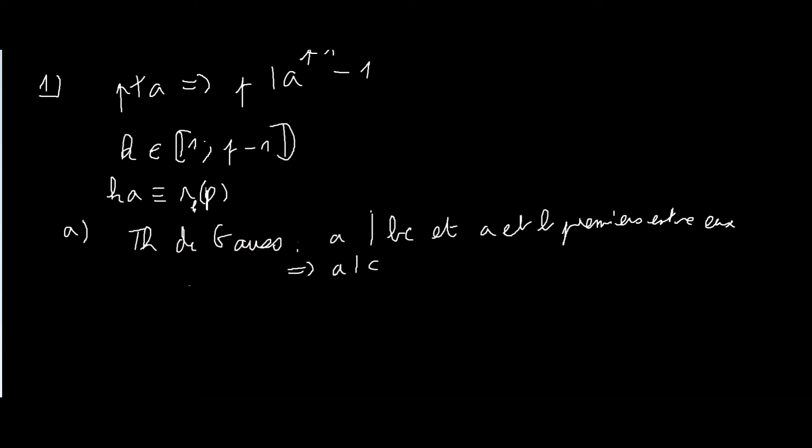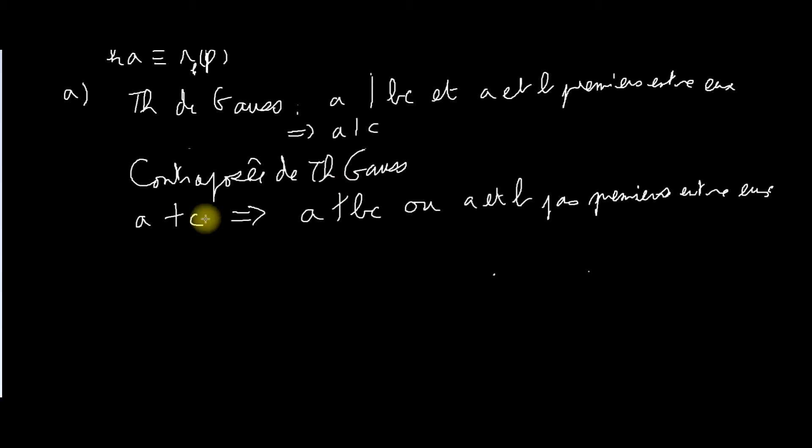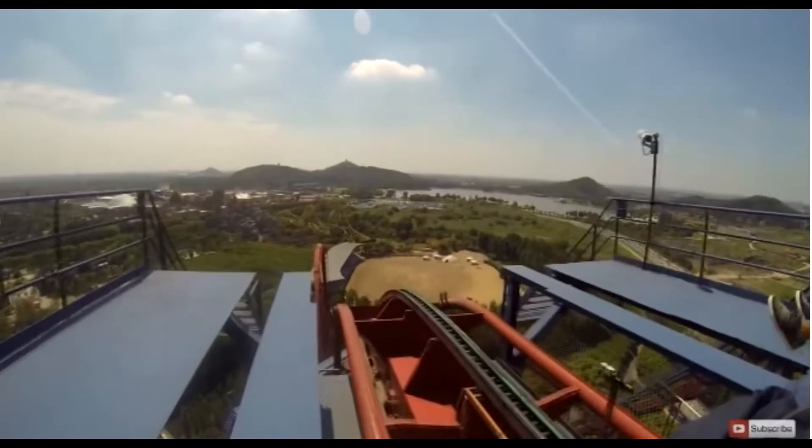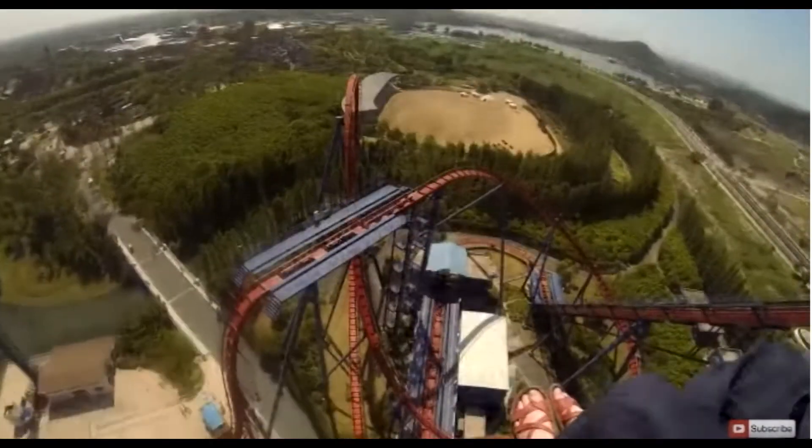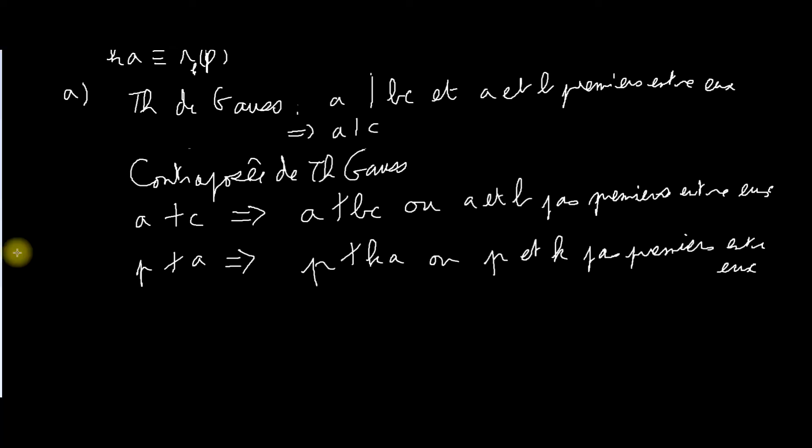Donc, je rappelle le théorème de Gauss. Et je vais écrire sa contraposée qui va nous servir pour répondre à la question. Donc, si A ne divise pas C, alors il ne divise pas BC ou A et B ne sont pas premiers entre eux. Je le retraduis par rapport aux éléments qu'on a dans l'exercice. Si P ne divise pas A, ce qui est une donnée, alors il ne divise pas KA ou P et K ne sont pas premiers entre eux.